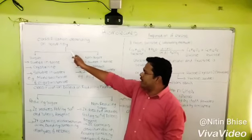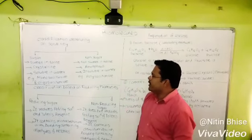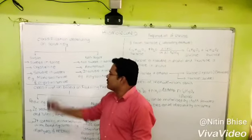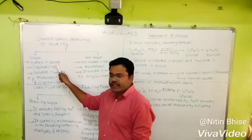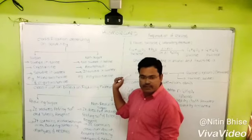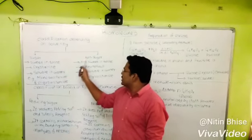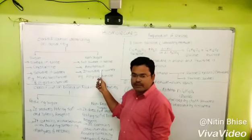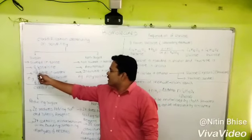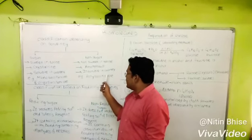Classification of carbohydrates on the basis of solubility. There are two types: sugar and non-sugar. Sugar is sweet in taste; non-sugar is not sweet in taste. Sugars are crystalline, while non-sugars are amorphous. Sugars are soluble in water, while non-sugars are insoluble in water.